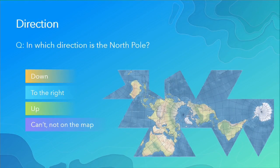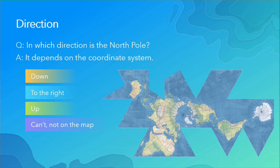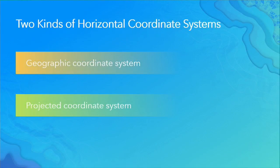The same applies to direction. The North Pole might be up, down, or to the right — it might not even be on a map. It all depends on the coordinate system. There are two kinds of horizontal coordinate systems: geographic and projected.